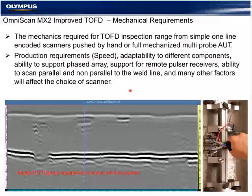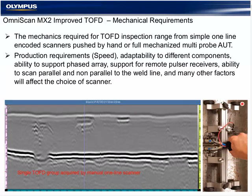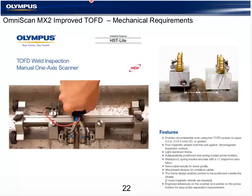The mechanical requirements for TOFD are also very simple. It's for one-line encoded scanners pushed by hand or full mechanized multi-probe UT. The scanner must hold the probes steady and stable in relationship to the weld and be able to roll smoothly. Scanners come in all shapes and sizes and can accommodate different probes, wedges, or multi-group or single-group configurations, typically featuring magnetic wheels, an adjustable bar, and probe holders with PCS adjustment.